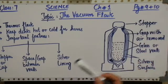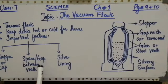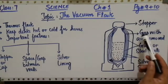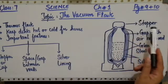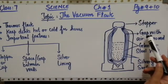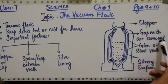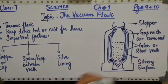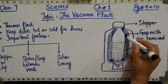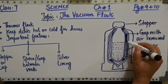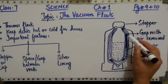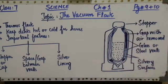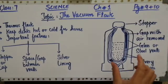The second point is related to the space or the gap which is present between the walls. After the labeling of the stopper, you can find here 'gap with air removed.' This area is where the vacuum is made.